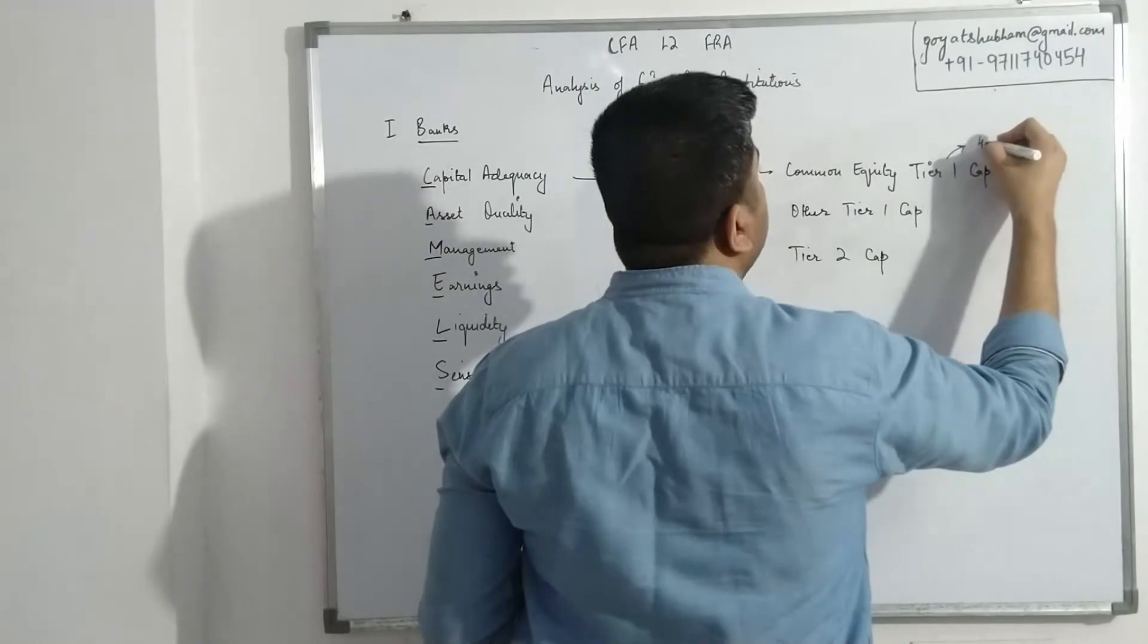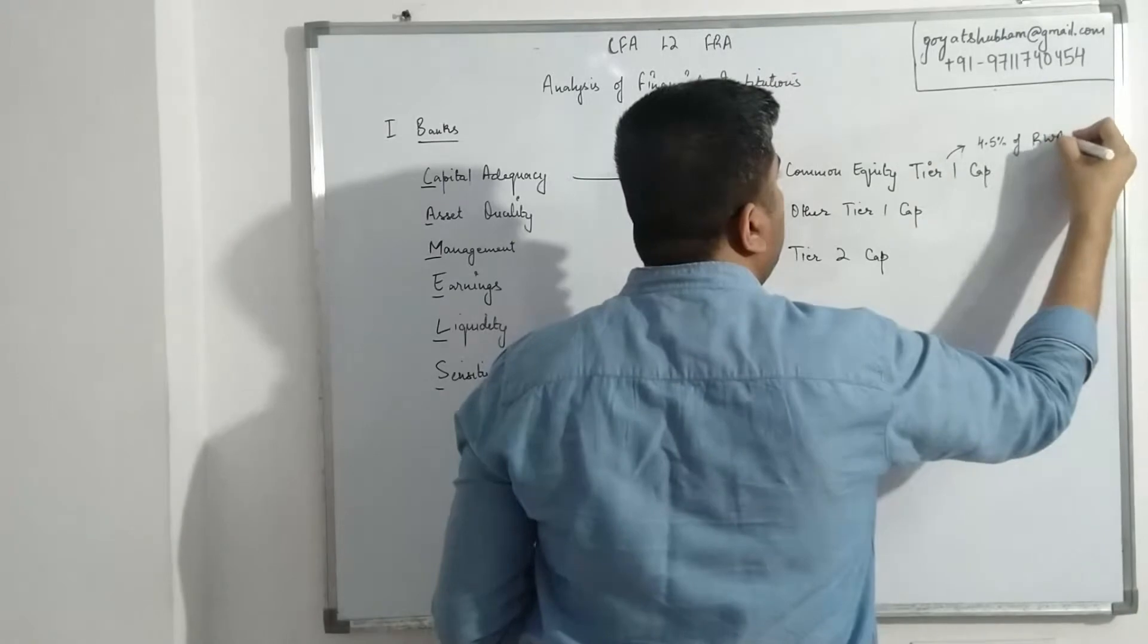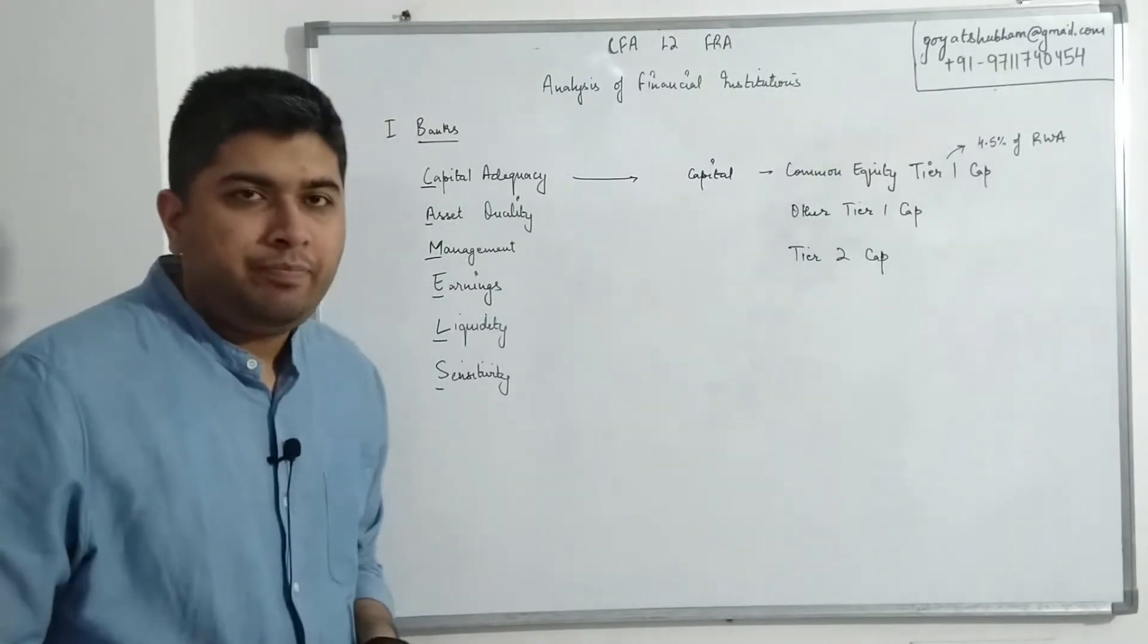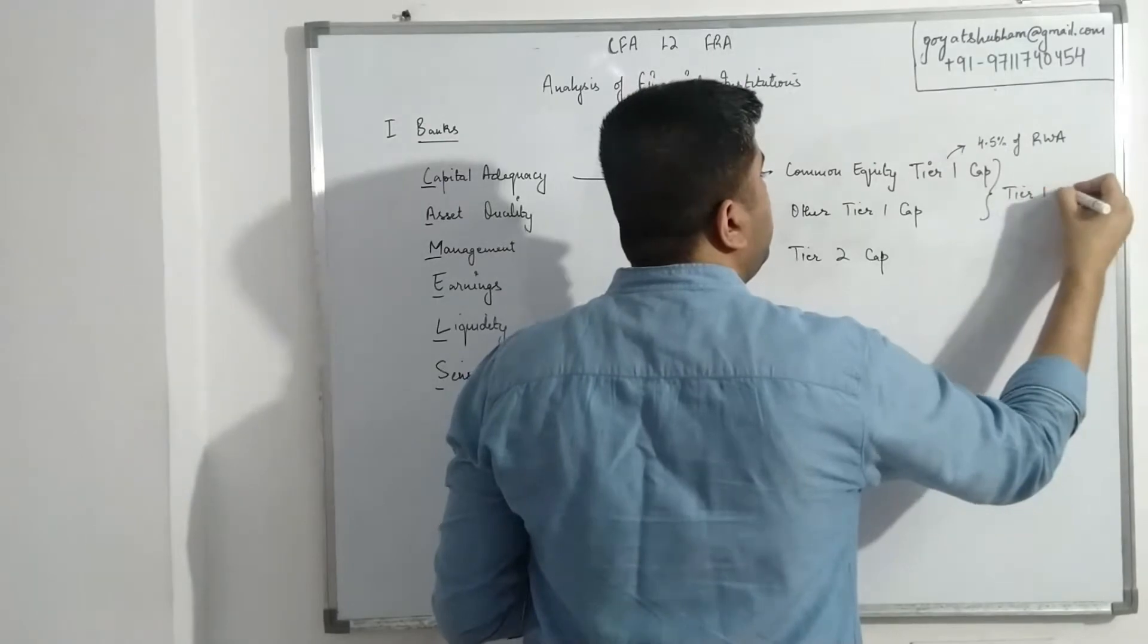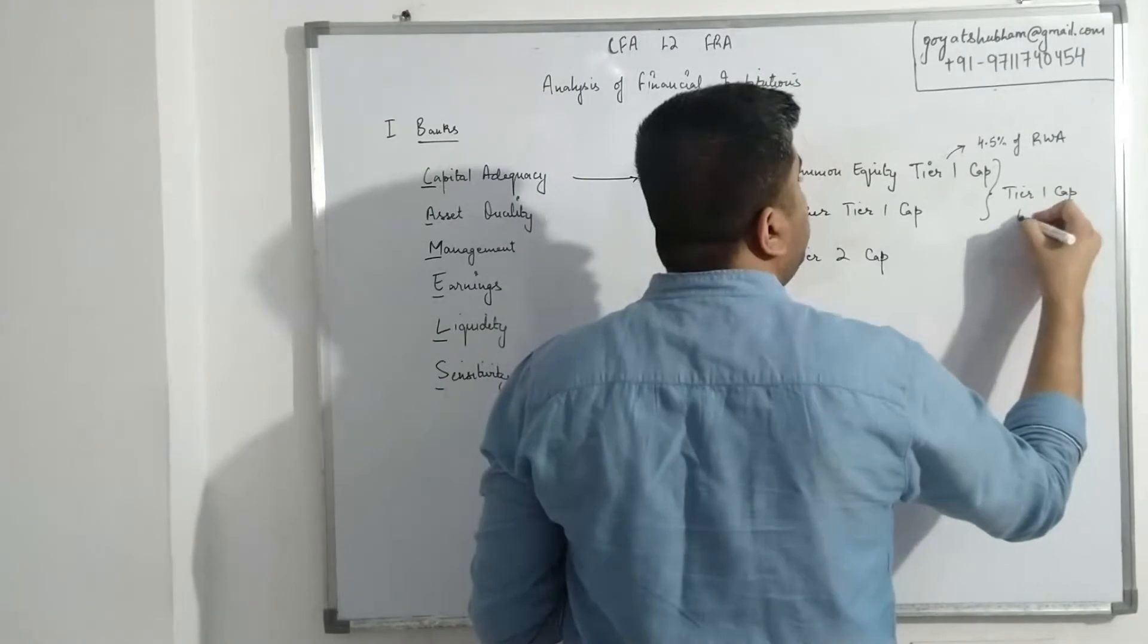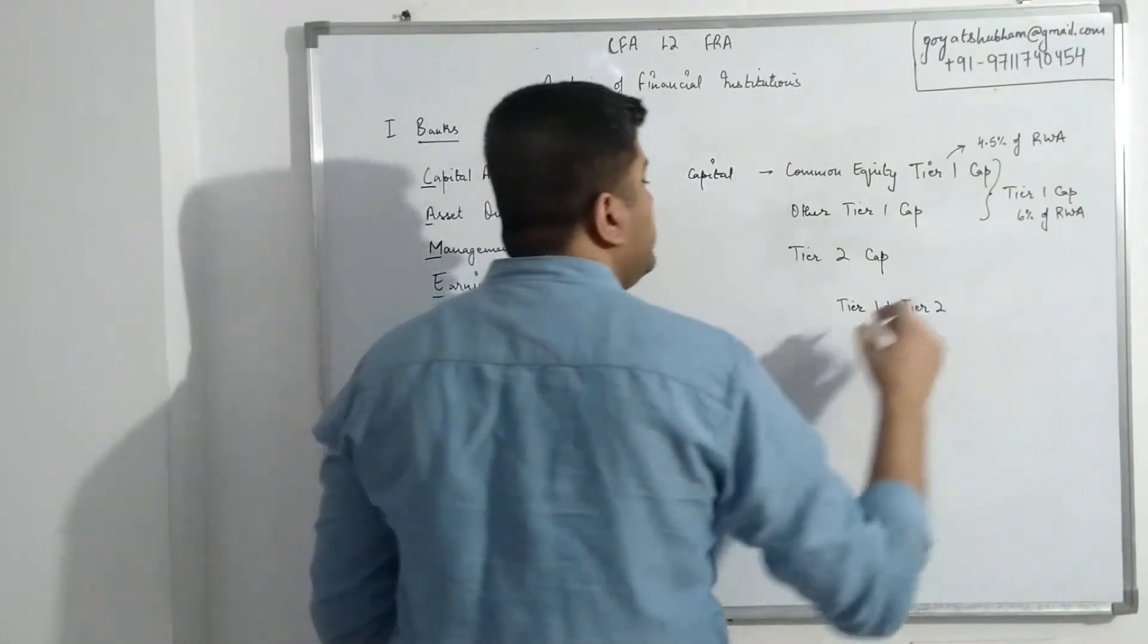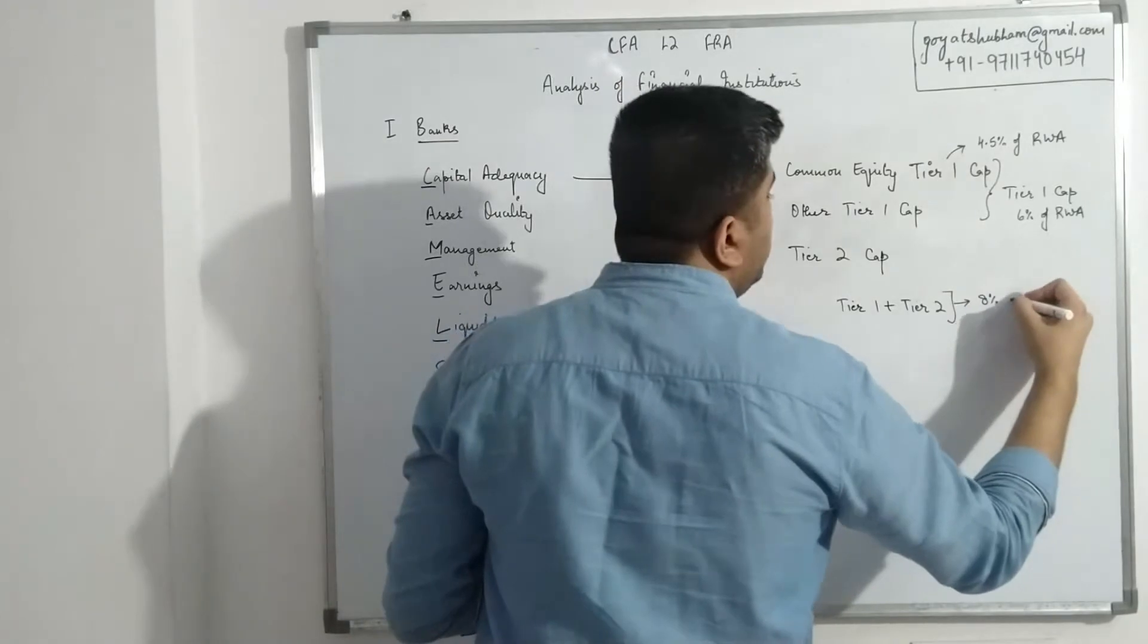The Basel 3 framework says that Common Equity Tier 1 Capital should be at least 4.5% of risk-weighted assets. Keep in mind this 4.5% is at least, which means bank should have at least this much capital. The combination of first two categories is called Tier 1 Capital, and the framework recommends this Tier 1 Capital should be at least 6% of risk-weighted assets.